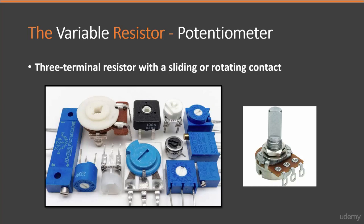In addition to fixed resistors, there are also variable resistors where the resistance can be adjusted by a physical rotation. One common type of variable resistor is the potentiometer. We can see in the picture on the left side that there are many types, sizes, and shapes of potentiometers, but the function is similar.